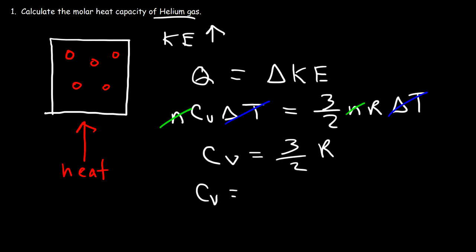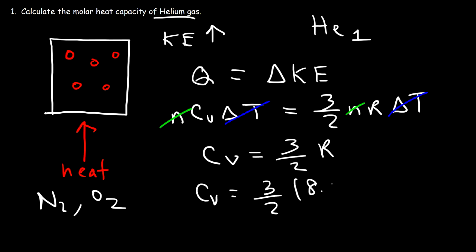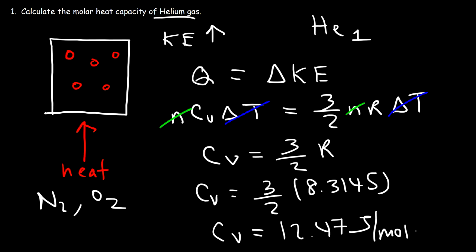A monoatomic gas consists of a single atom per particle. A diatomic gas, like N₂ or O₂, has two atoms per molecule. For this problem, it's (3/2) times 8.3145, and so for helium the molar heat capacity is 12.47 joules per mole per kelvin. That is the answer.